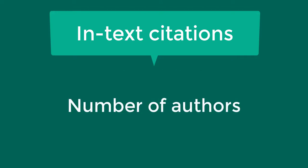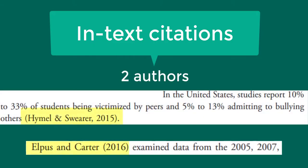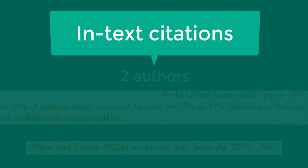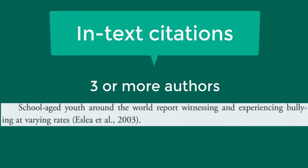There are also a number of rules for how to list authors depending on the number of authors. If the material you are citing has two authors, you need to include both authors' last names. Use an ampersand when the citation is at the end of the sentence, and use the word 'and' when the authors' names are written within the sentence.